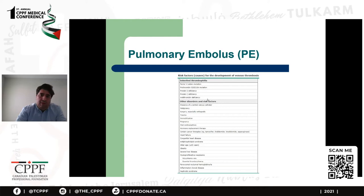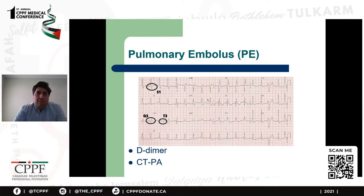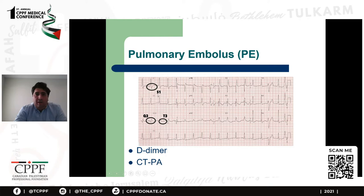ECG is a very important test if you suspect pulmonary embolism. The main finding is sinus tachycardia, especially when there is strain on the heart. Other clues include the S1Q3T3 sign — a deep S wave in lead I, a deep Q wave in lead III, and an inverted T wave in lead III. If you see this in someone with chest pain, especially with sinus tachycardia, it is really suspicious for pulmonary embolism.